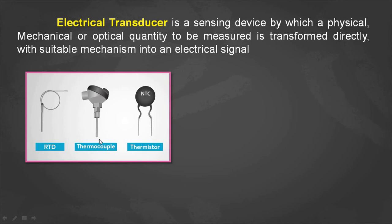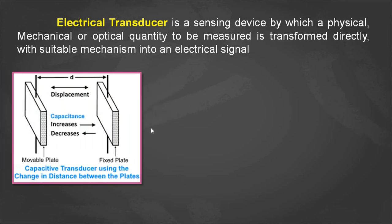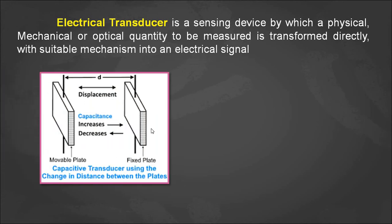For the thermocouple, it works on the principle of the Seebeck effect — depending upon the temperature variations, the output voltage will vary, so the input temperature is directly converted into voltage. The thermistor is a negative temperature coefficient device, where the output resistance is very sensitive to the input temperature.